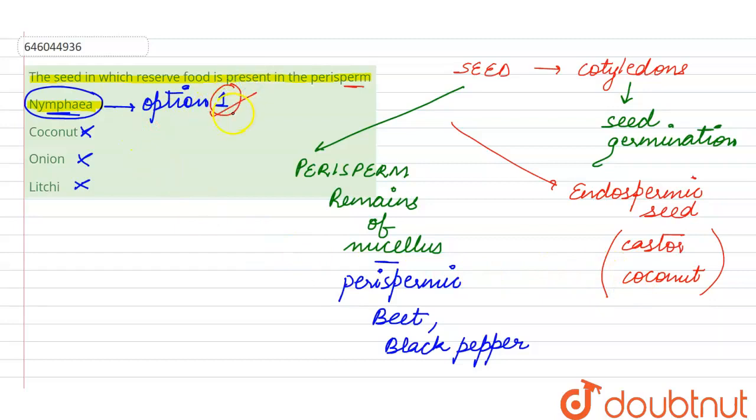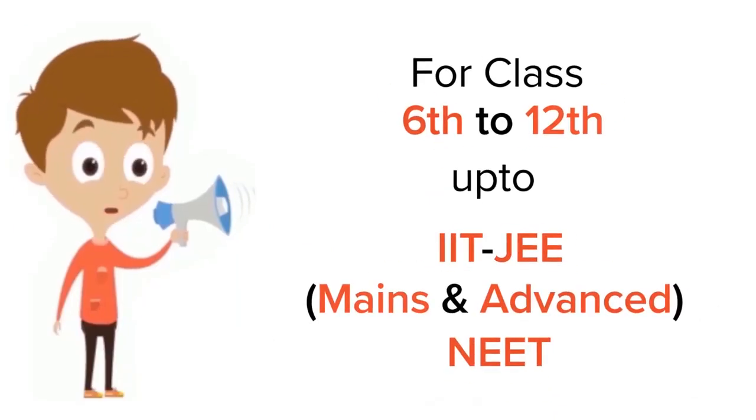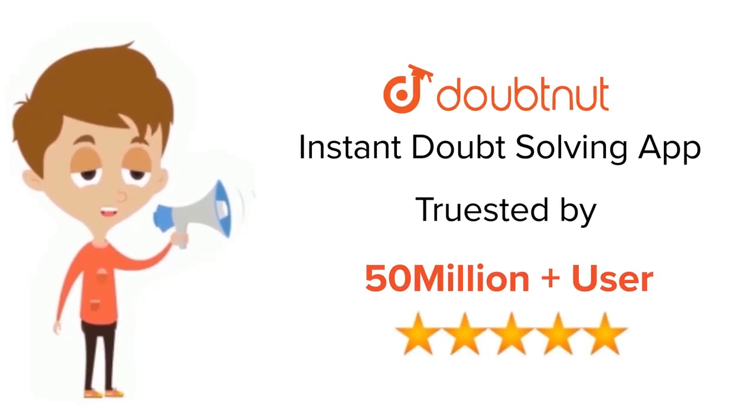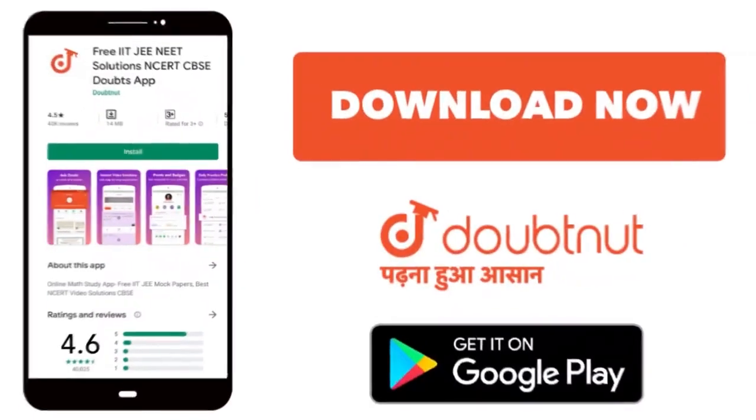Option one is the right answer. This is all about this query, thank you. For class 6 to 12, up to IIT-JEE and NEET level, trusted by more than 5 crore students, download Doubtnut app today.